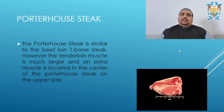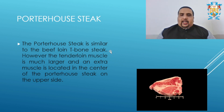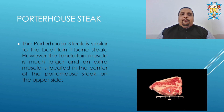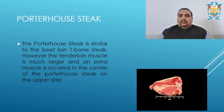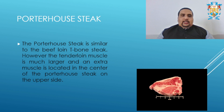Next is the porterhouse steak. The porterhouse steak is similar to the beef loin T-bone steak; however, the tenderloin muscle is much larger. Additionally, an extra muscle is located in the center of the steak. On the upper side you can see this extra muscle, along with the tenderloin and the normal round section of the steak.